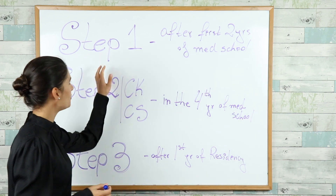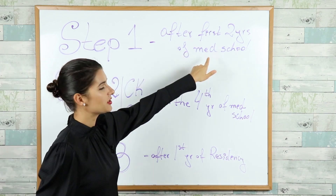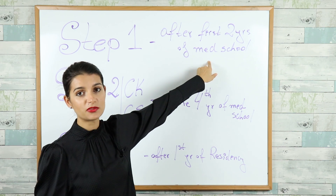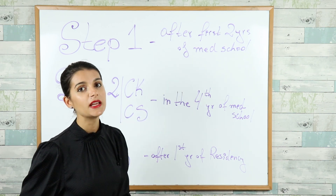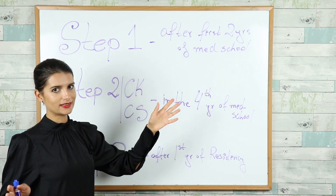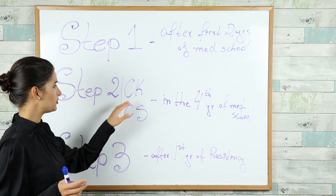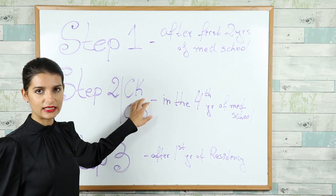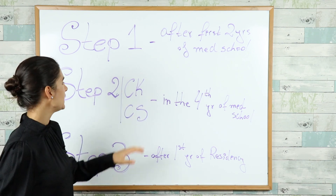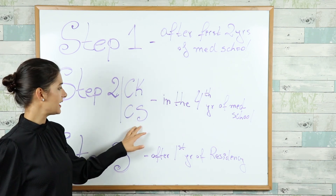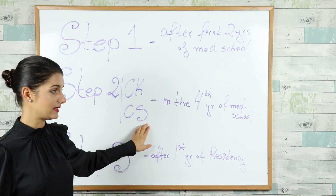The Step 1 exam is normally taken after the first two years of medical school. The first years are basic sciences, so Step 1 tests basic sciences. Step 2 has two parts: Step 2 CK, which is Clinical Knowledge and is a computerized test, and CS, which stands for Clinical Skills and is a practical test.